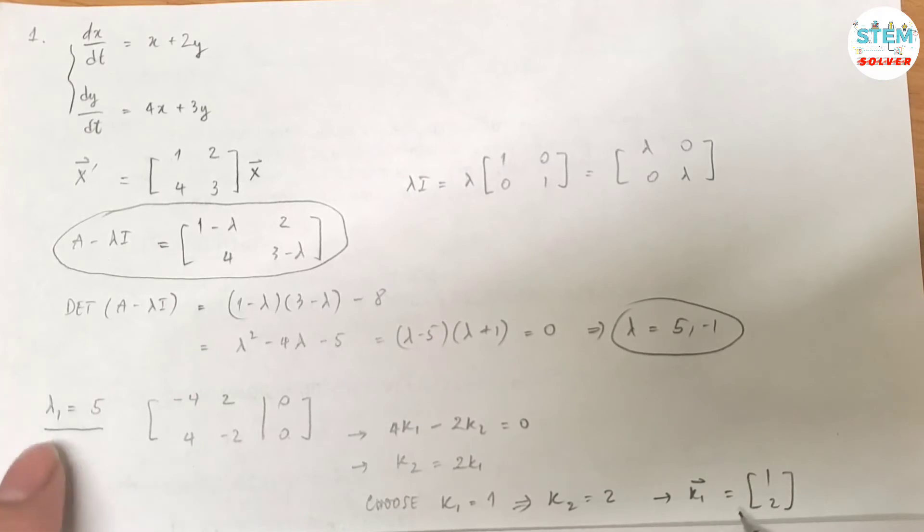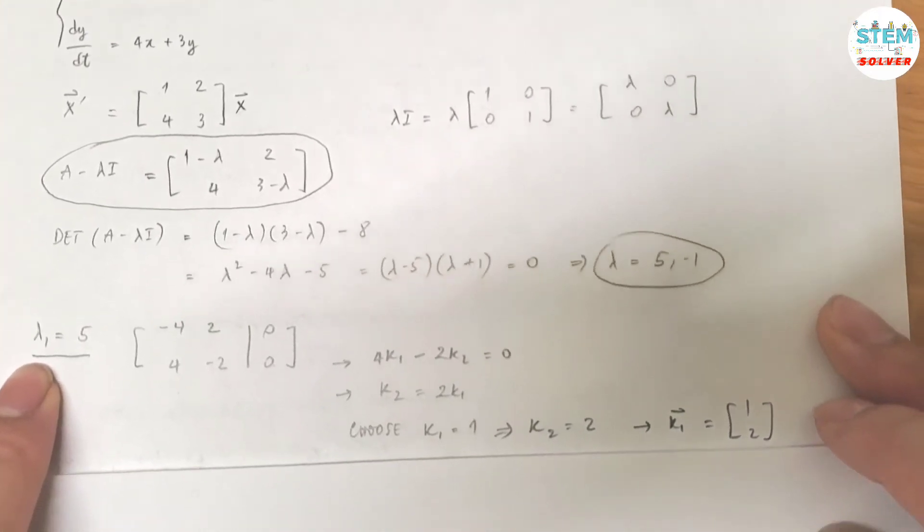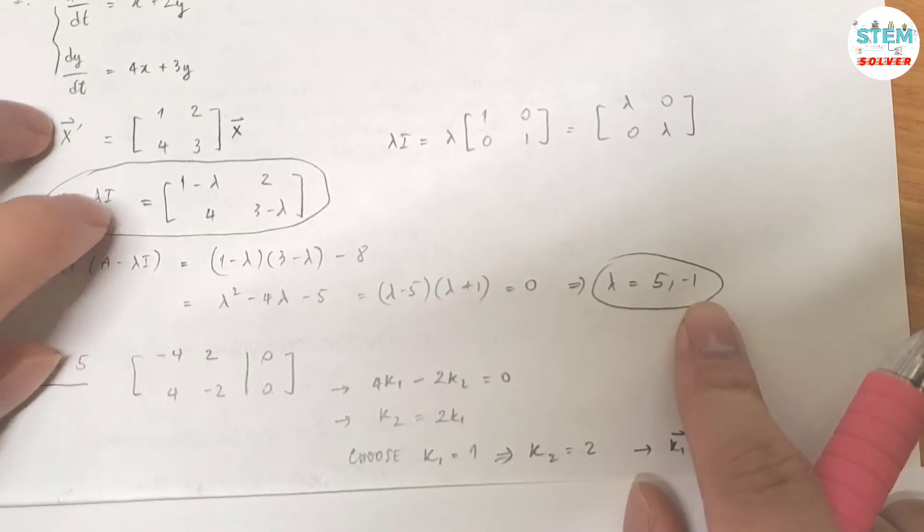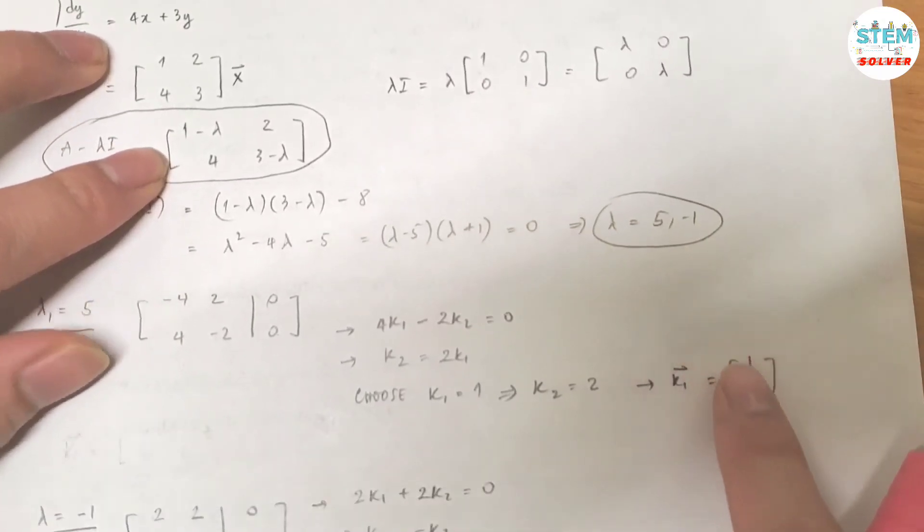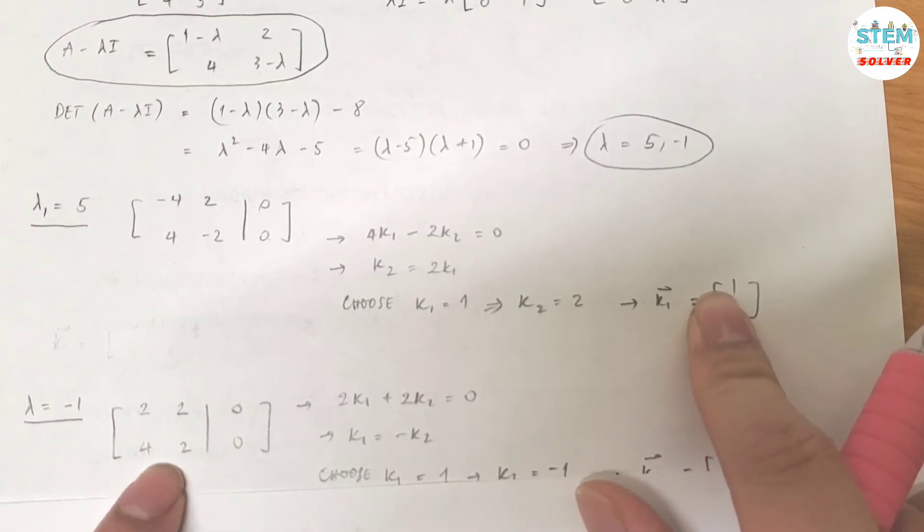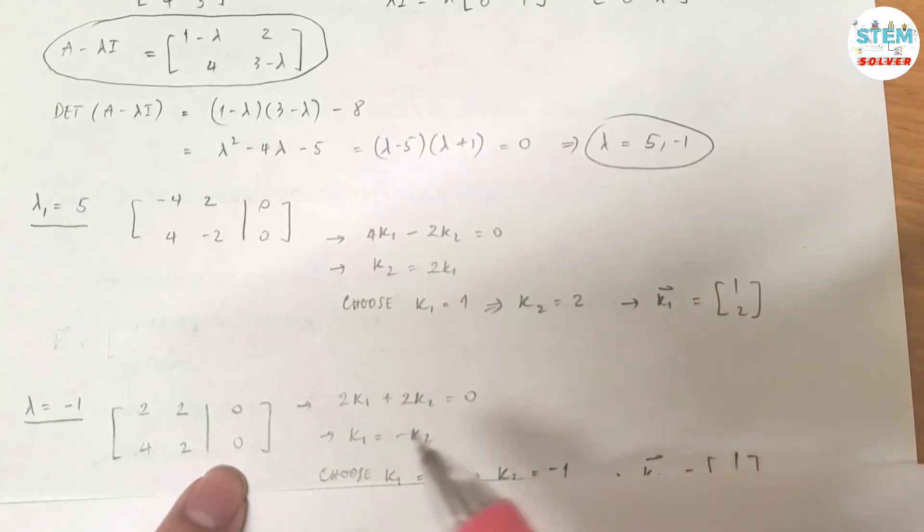Now you are going to do the same thing for lambda equals negative 1. Plug it into here. You will get a matrix which is this matrix. And then again, if you reduce this down to a basis matrix, you will get infinite solution. So I'm going to use the first equation.